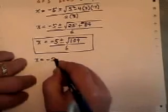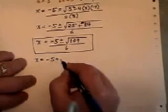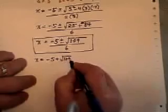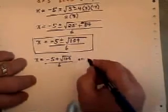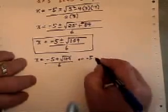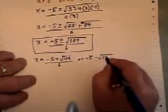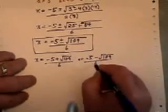You take one answer and add the square root of 109, divide your answer by 6, and take your other answer and subtract the square root of 109 and divide your answer by 6.